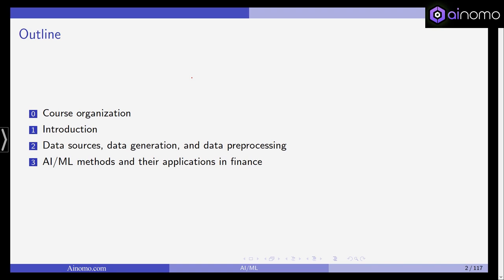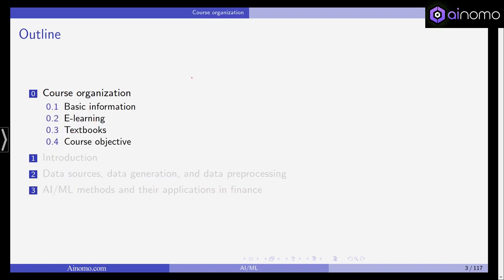And then, as I said, in the third chapter, which will be the largest part in this lecture, we will discuss various methods from artificial intelligence and machine learning, and how they are applied to questions and problems in finance and financial economics. So, this is the outline, and we will start directly with the course organizations and basic information.